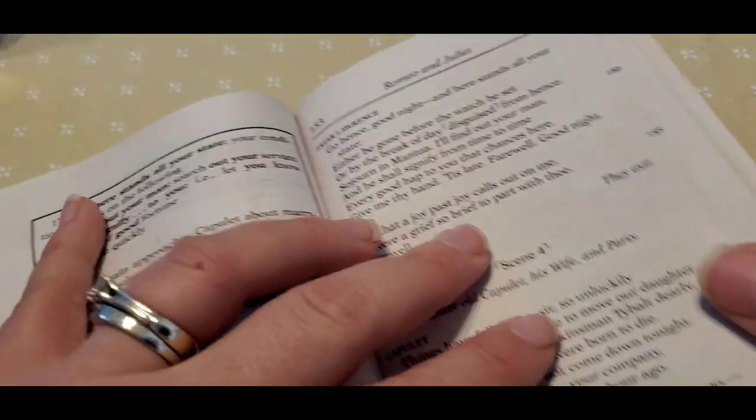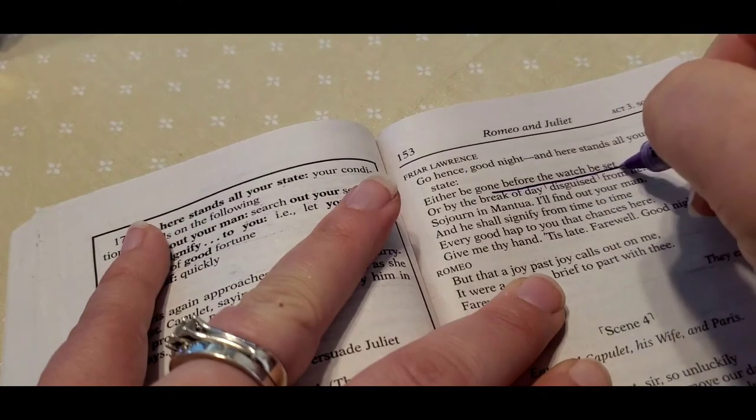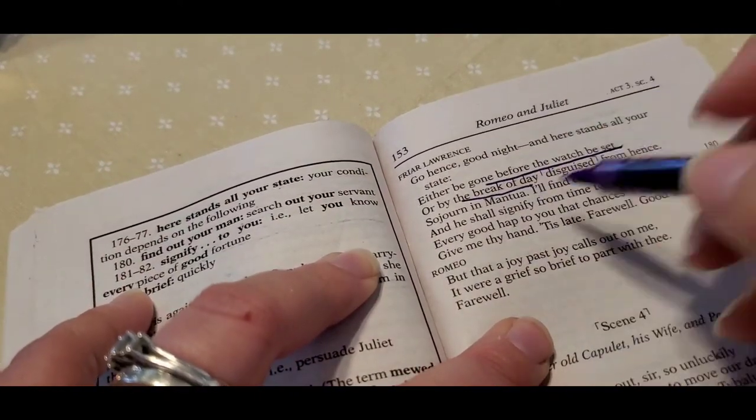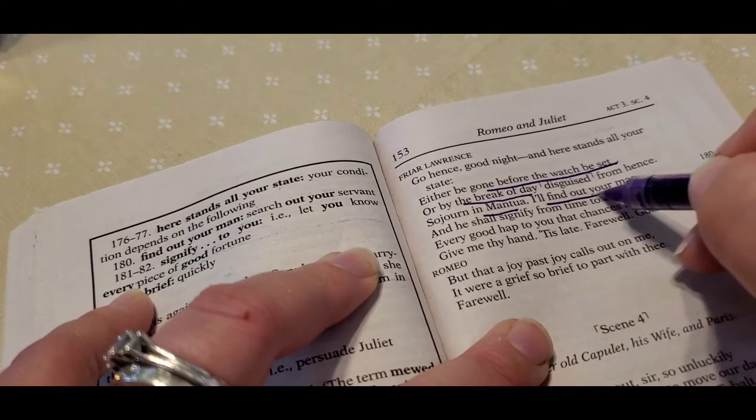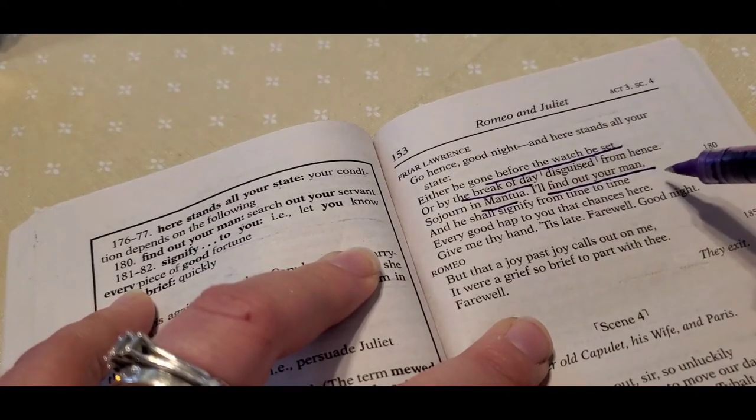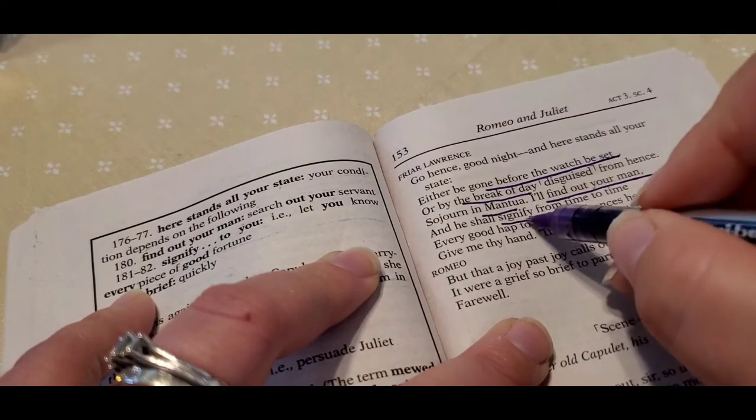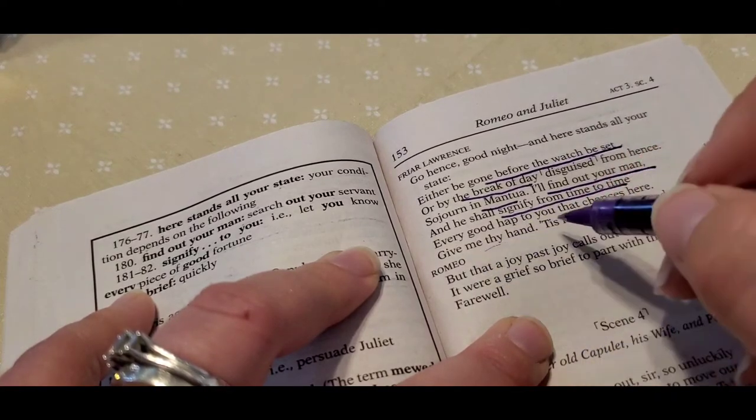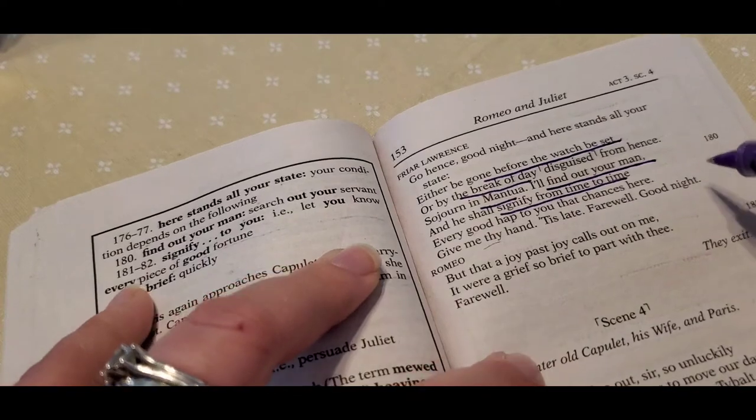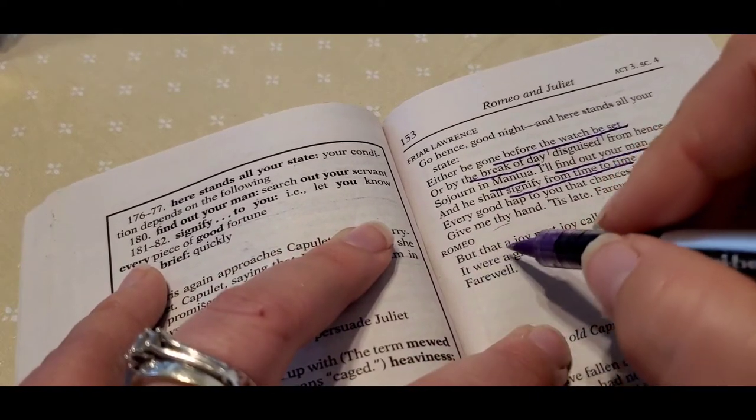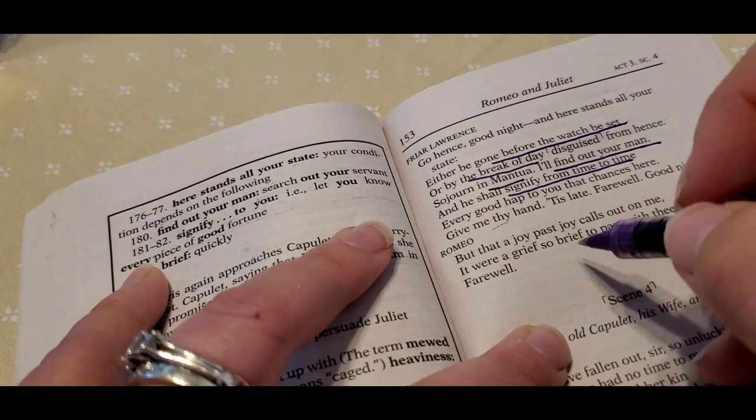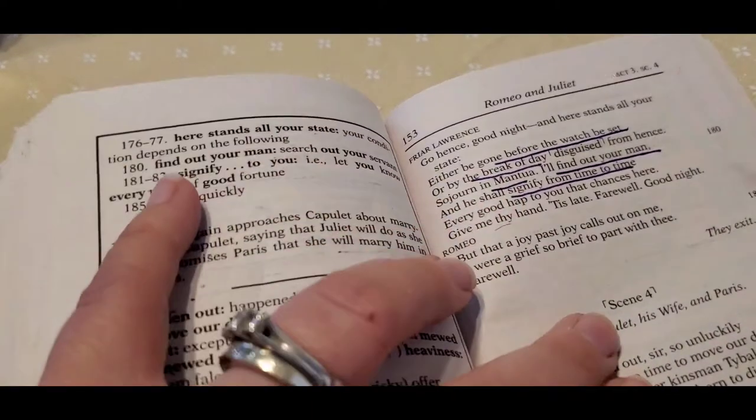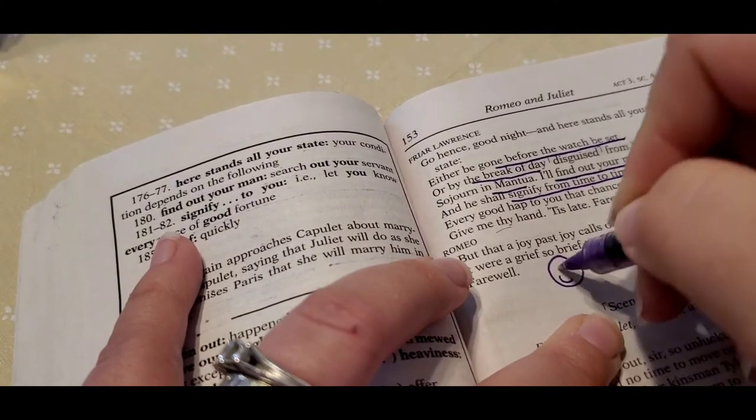And he says, you better hurry. Make sure that you get out of there in the morning at the break of day, go to Mantua. I'll find your man, meaning I'll find your servant. And he'll give you signals from time to time. And then we'll let you know. And he says, it's late. Farewell. And he says, but that the joy, past joy calls out on me. If it were a grief, so brief to part with thee, farewell. So Romeo is so happy at the end of this. It's super positive. Yay.